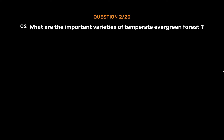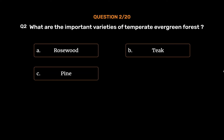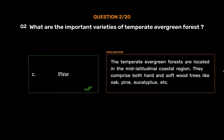Question number 2: What are the important varieties of temperate evergreen forest? Option A: Rosewood. Option B: Teak. Option C: Pine. Option D: Neem. The correct answer is Option C: Pine. The temperate evergreen forests are located in the mid-latitudinal coastal region. They comprise both hard and soft wood trees like oak, pine, eucalyptus, etc.